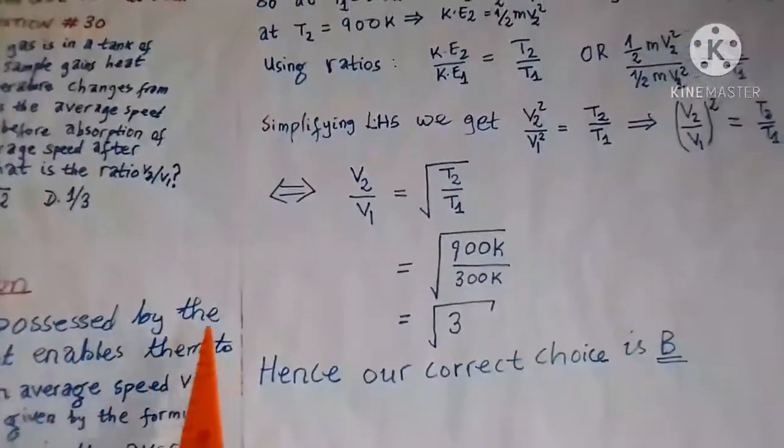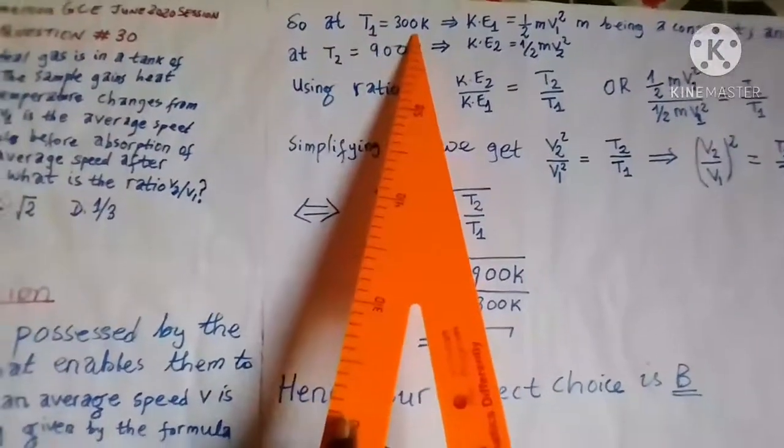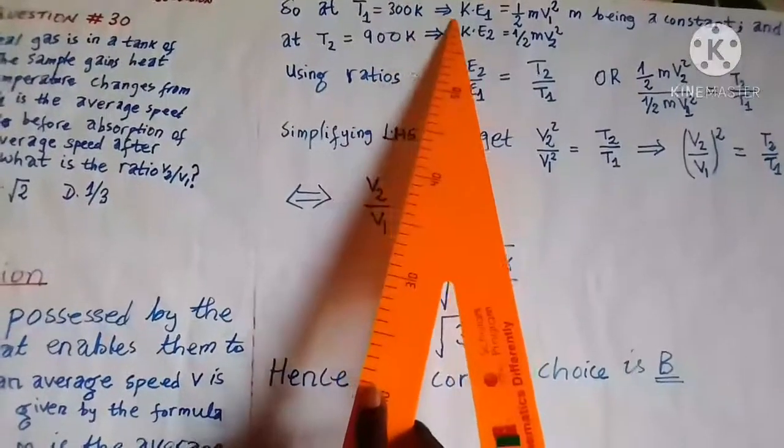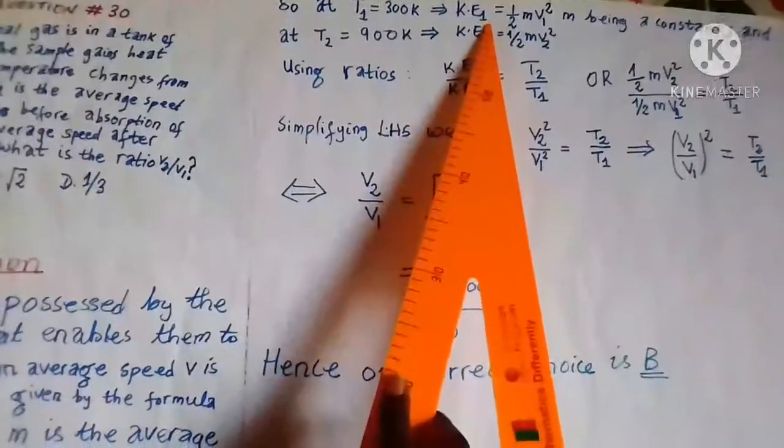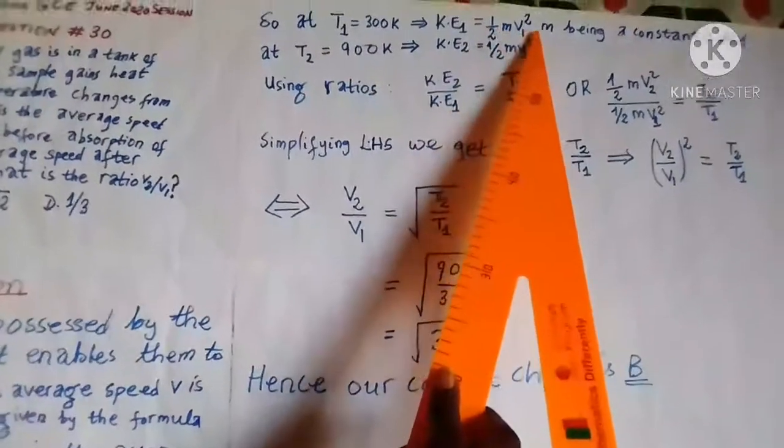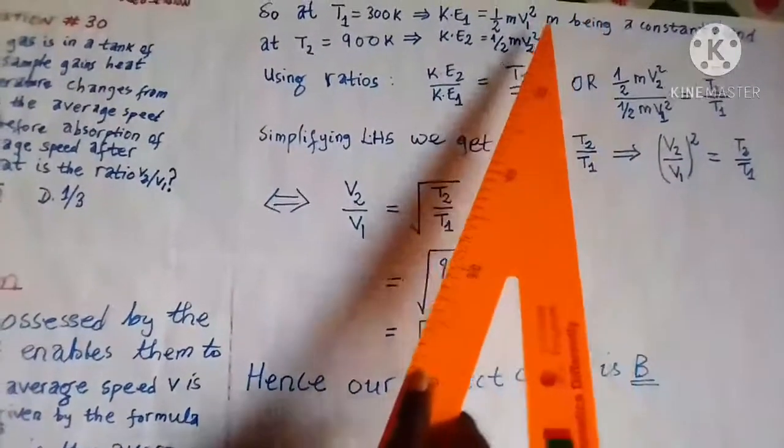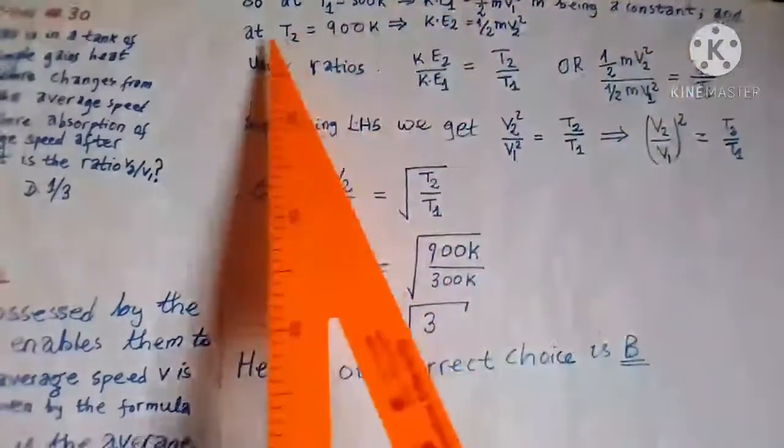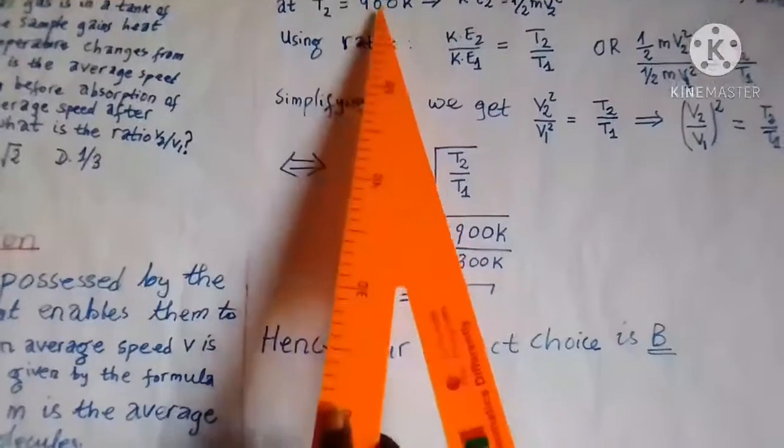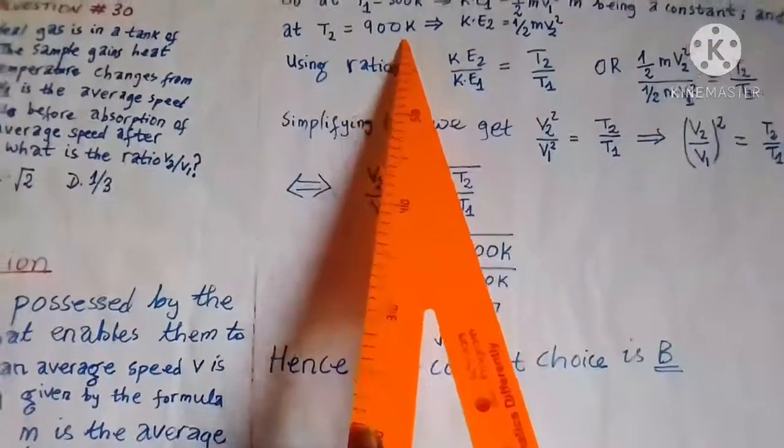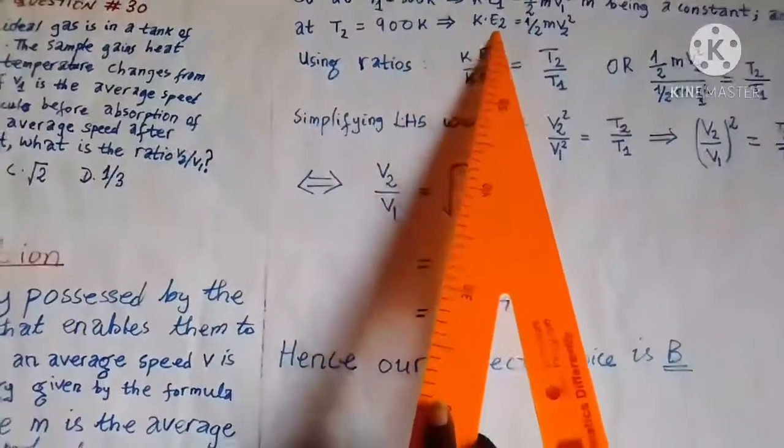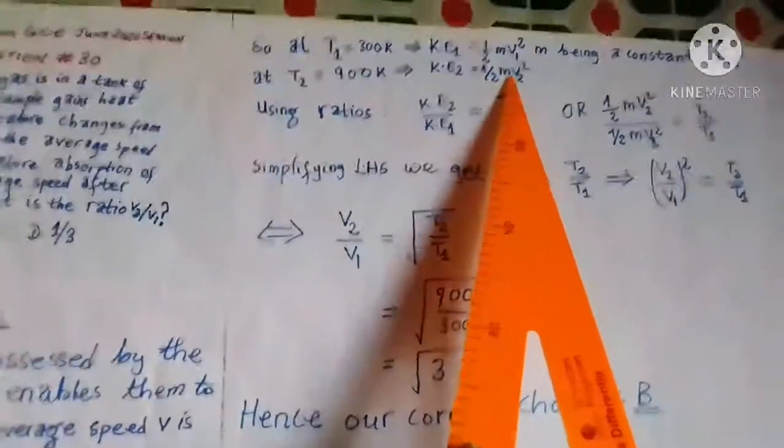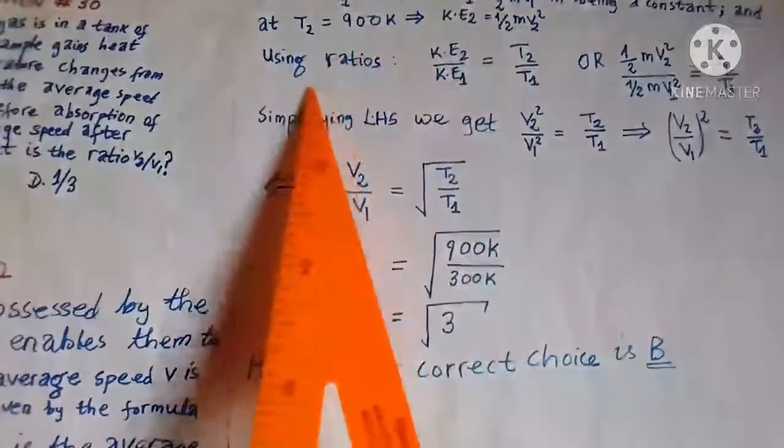At T1 = 300 Kelvin, we have kinetic energy 1 to be equal to 1/2 mv₁², where m is mass which is constant. And at T2 = 900 Kelvin, this gives us kinetic energy 2 of 1/2 mv₂².